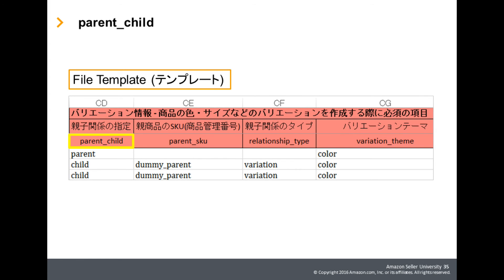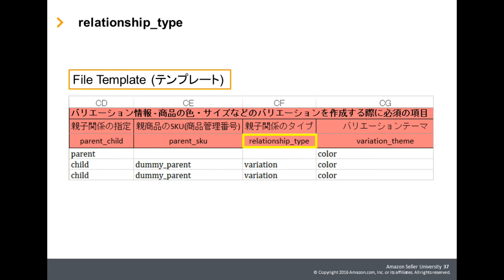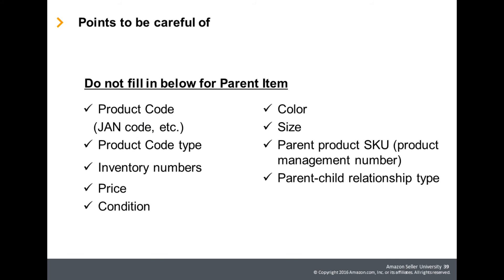Parent-Child: Specify if the product is a parent or a child. Parent-SKU: Enter the Parent-SKU that the child belongs to. Only fill out this field for child items. Relationship Type: This will always be Variation. Only fill out this field for child items. Variation Theme: Select from the drop-down options or check the Valid Values tab for possible variations of your product. In our example, the variation theme is color. You'll need to provide the same required attributes for the parent items as the child items. However, since the parent is not a physical item for sale, leave the product ID, price, quantity, item package quantity, weight information, and the varying attributes such as color and size blank.